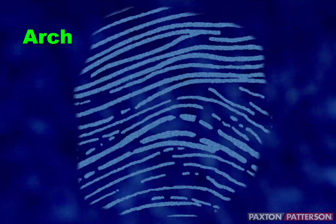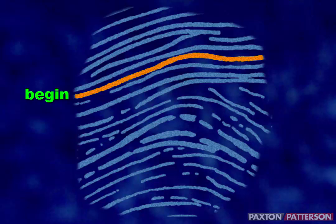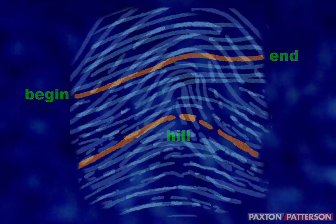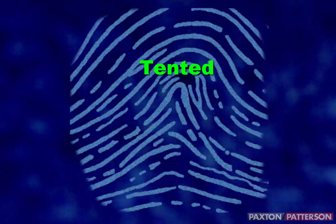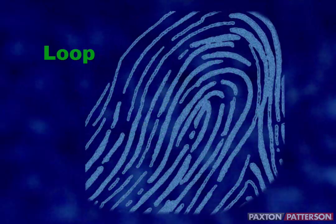An arch is the simplest type of fingerprint pattern but also the most rare — only about 5% of the population has arch prints. Arch patterns have ridges that begin on one side and end on the other side, making a line that looks like a hill. A tented arch has a higher, more prominent spike in the center.